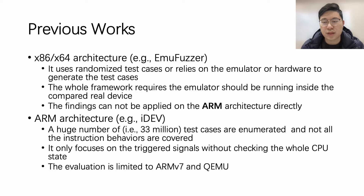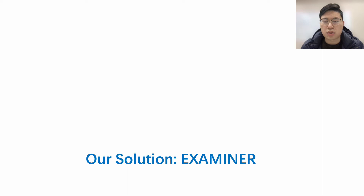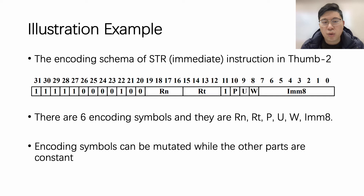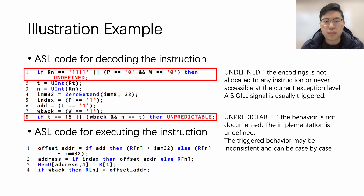Considering the limitations of previous works, we propose Examiner. We illustrate how Examiner works with a concrete example. Below is the encoding schema of the store immediate instruction in thumb mode. Note that one instruction has more than one instruction encoding in ARM due to different instruction modes. We noticed that there are six encoding symbols. RN and RT represent registers, while P, U, and W are flags. The symbol IMM8 represents an immediate value with 8-bit length. Encoding symbols can be mutated while the other parts are constant. Each instruction encoding maps to one decoding and execution logic described in ASL.